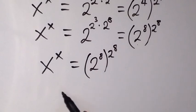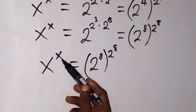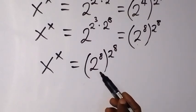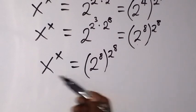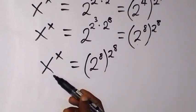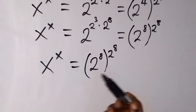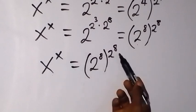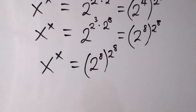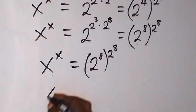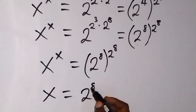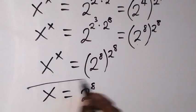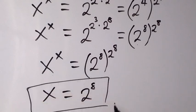Now we have something interesting: a number raised to the same number equals another number raised to the same number. We can therefore say this number equals that number. So x equals 2 raised to power 8, and this is the value of x.